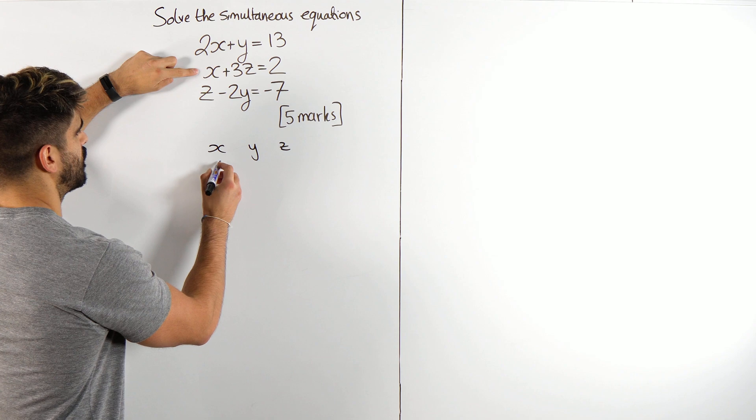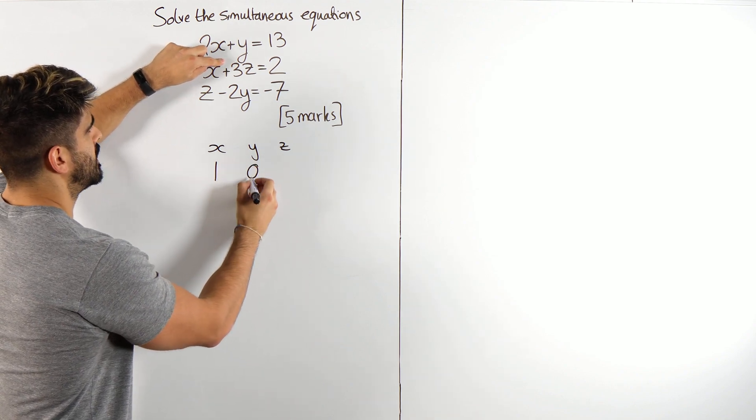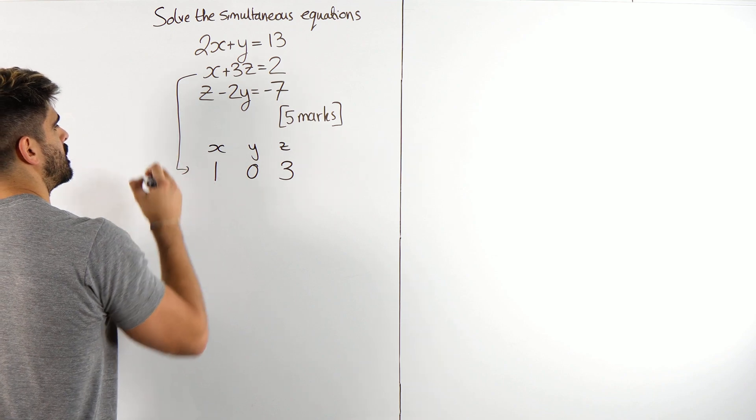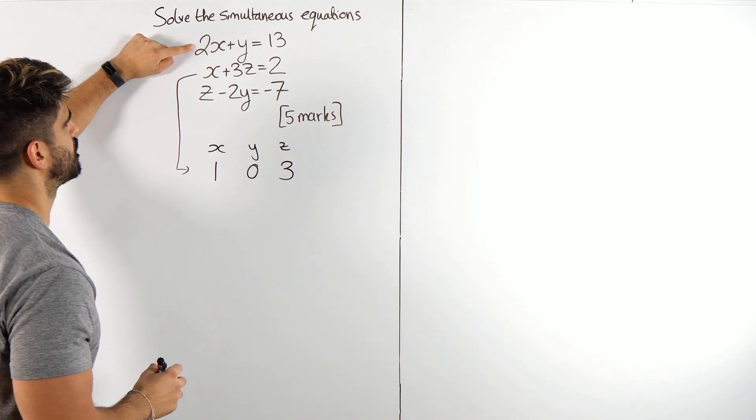So what are the coefficients? The coefficient of x here is 1, the coefficient of y here is 0, the coefficient of z is 3. So that's this one.